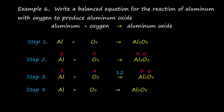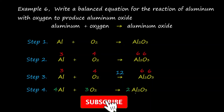Step four is to divide the LCM by each total valence and place the result as a coefficient. Twelve divided by three for aluminium equals four — write four as the coefficient. Twelve divided by four equals three, which is the coefficient for oxygen. Twelve divided by six equals two — write two as the coefficient for aluminium oxide.